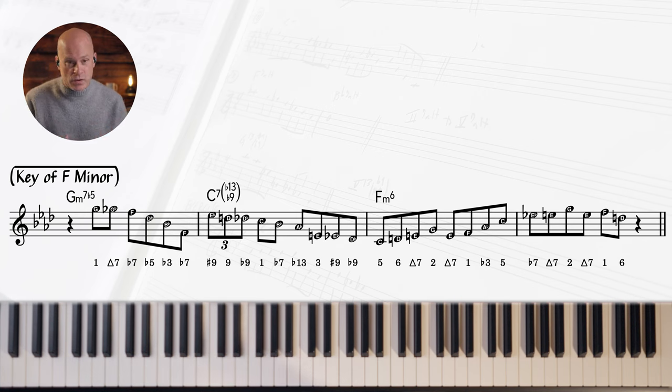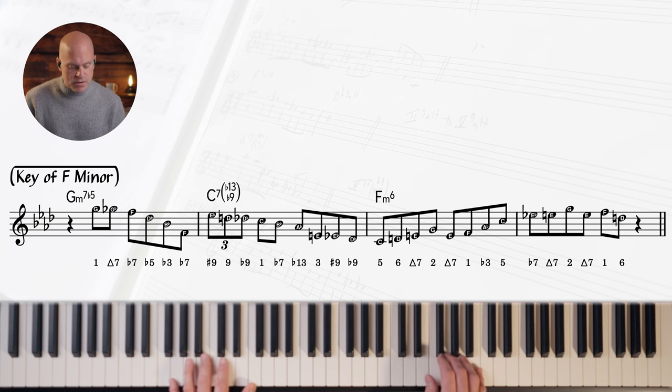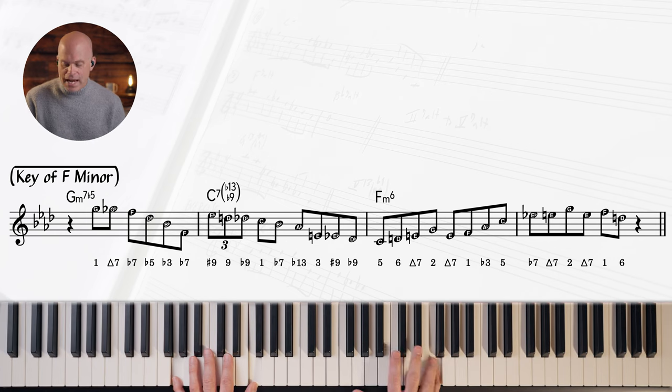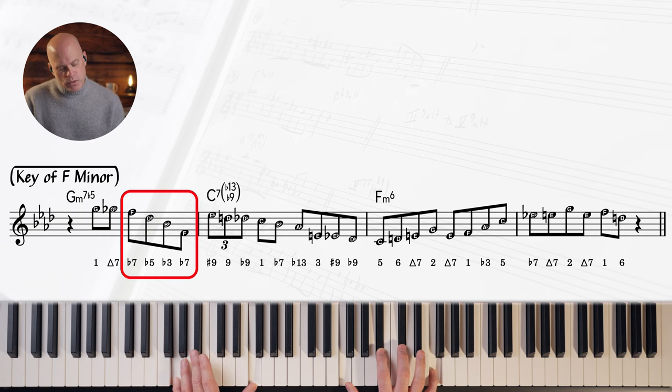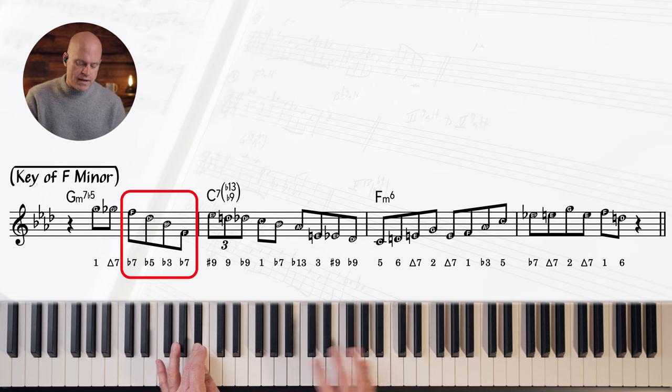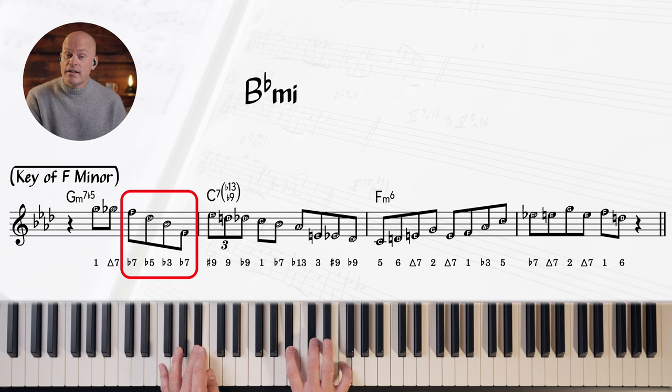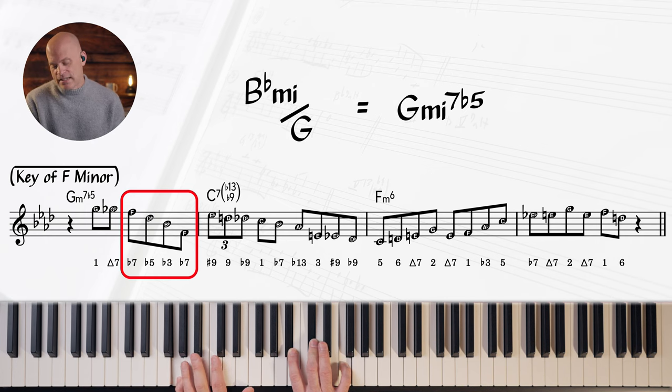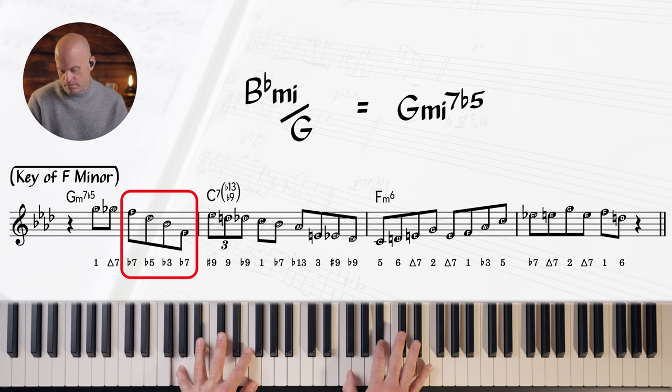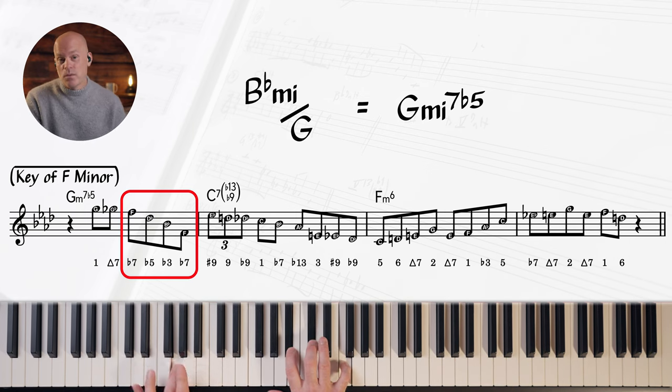Remember, when we're learning these licks, not only are you learning vocabulary, you're learning what things are being implemented. What concepts, what musical elements. Arpeggios, enclosures, rhythmic stuff. Right away, we're starting on the root. We're doing a chromatic approach down and then we have this. It's a B flat minor triad. Now this is cool because the bebop musicians didn't really call this a half diminished chord. They called it a minor chord with a 6 in the bass.